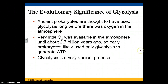This is of evolutionary significance because ancient prokaryotes were thought to use glycolysis before oxygen even existed in the atmosphere. Very little O2 was available until about 2.7 billion years ago, at which point there was a boom in the amount of atmospheric oxygen.